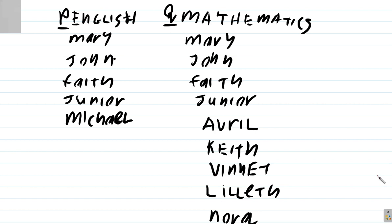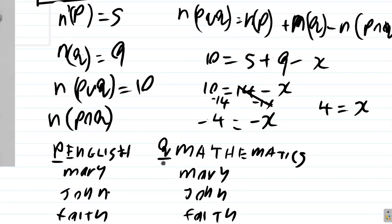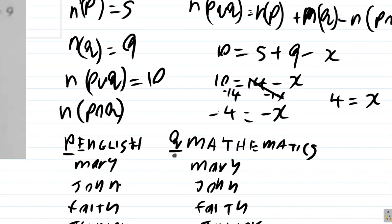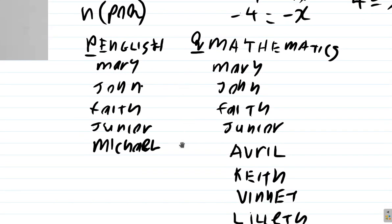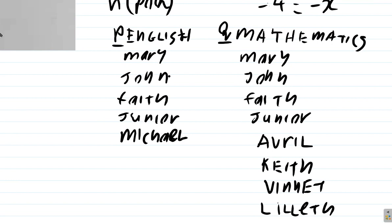So what's the total number of students? If you count all of them, you get 14. So the union is 14, right? No. The total here is 10. There are 10 students registered. So how is it that I'm counting 14? The reason is for those who are in both classes at the same time, the intersection. You have Mary, John, Faith, and Junior.